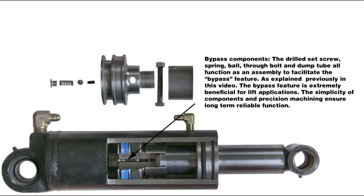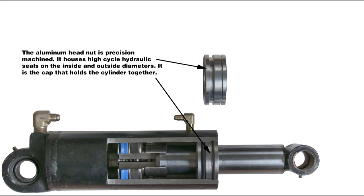The aluminum head nut is precision-machined. It houses high-cycle hydraulic seals on the inside and outside diameters. It is the cap that holds the cylinder together.